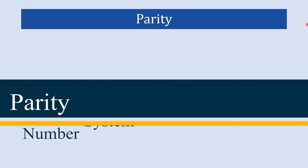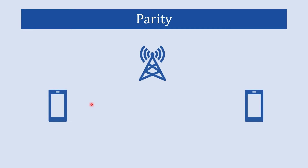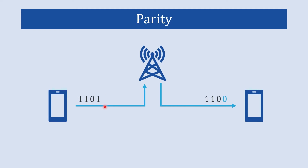Here we are going to learn about parity error detecting code. When we send data from one point to another point, there might be some change in data because of noise or any other issue.